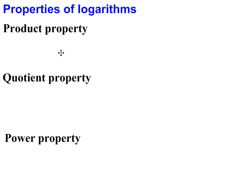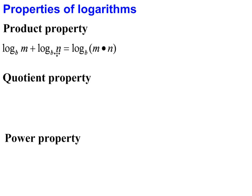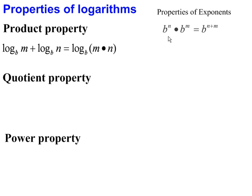In the product property, we see that the expression log base b of m plus log base b of n could be rewritten as log base b of the product of m and n. If you're wondering why that is, recall that when you are multiplying two exponents with the same base — b to the n times b to the m — you can rewrite that as b to the n plus m.